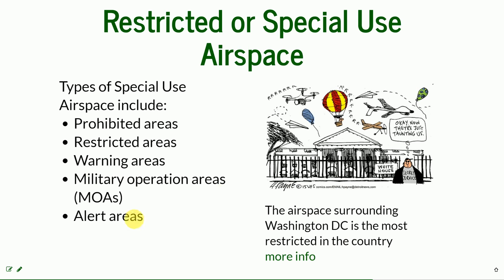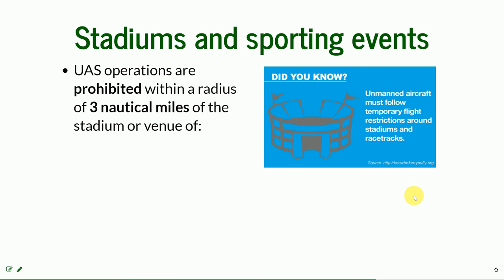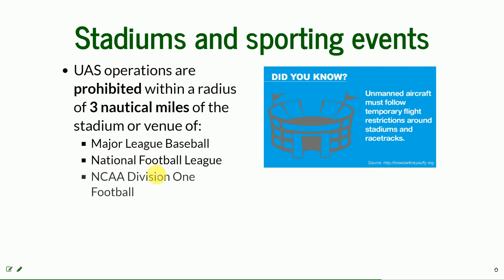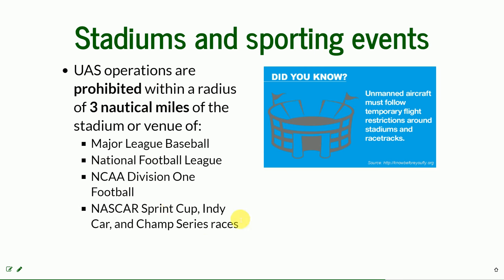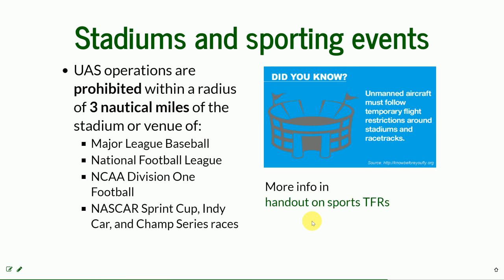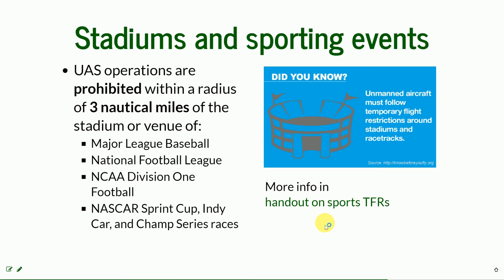There are also alert areas and controlled firing areas, or CFAs, which are updated on the electronic map. For stadiums and sporting events, UAS operations are prohibited within a radius of three nautical miles of the venue during major sporting events such as Major League Baseball, the National Football League, NCAA Division I football, and NASCAR Sprint Cup races. These temporary flight restrictions can also be found on the electronic airspace map. There is a handout about sporting events because it is common for people to want to use their drones to monitor or view games.